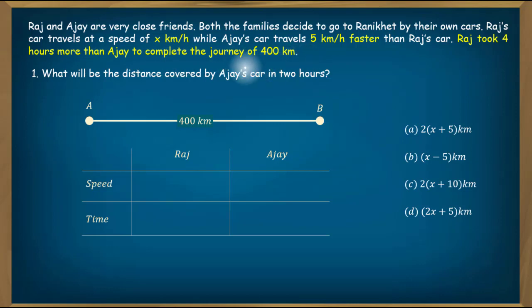The question asks: What will be the distance covered by Ajay's car in 2 hours? We have written the information in tabular form. The rows are speed and time, and the columns are Raj and Ajay. The speed of Raj given is x kilometer per hour. Ajay's car is 5 kilometer faster, so x plus 5 kilometer per hour.